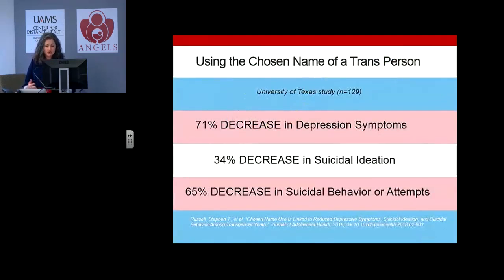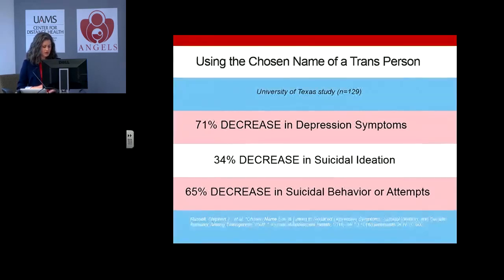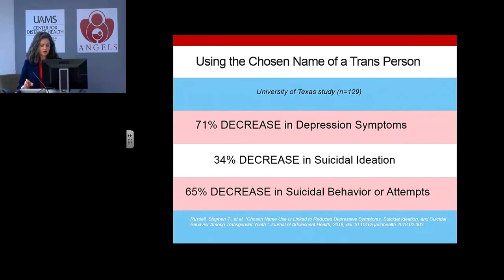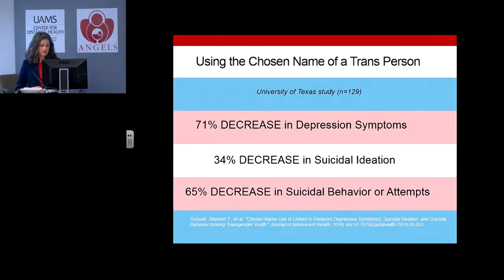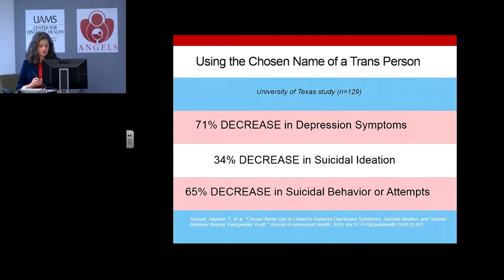If you're wondering why using a chosen name and pronoun is so important, there is research to back this up. A particular study examined the relationship between chosen name use as a proxy for gender affirmation in various contexts, combined with mental health outcomes among transgender youth. Data came from a community cohort of 129 transgender and gender nonconforming youth from three U.S. cities. Results showed that chosen name use in more contexts was associated with a decrease in depression, suicidal ideation, and attempts. For transgender youth who choose a name different from the one given at birth, use of their chosen name in multiple contexts affirms their gender identity and reduces mental health risks.